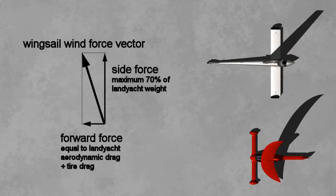The wind sail force vector also produces a side force, which is much greater than the forward force. The side force may be at most no more than about 70% of the land yacht's weight, or the yacht will slide sideways or capsize.